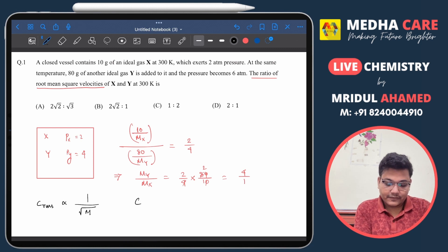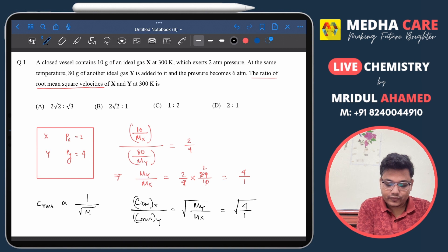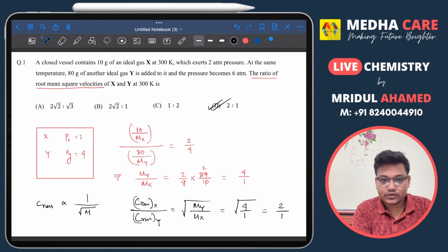The C_rms for X divided by C_rms for Y, that will be root over My divided by Mx. And that we are getting 4 by 1, there is 2 is to 1. So the correct answer of this question will be 2 is to 1.